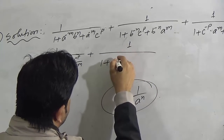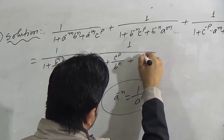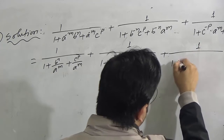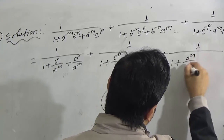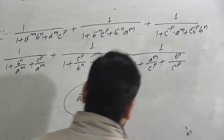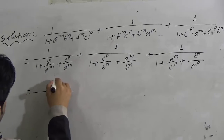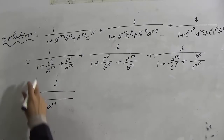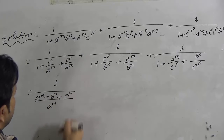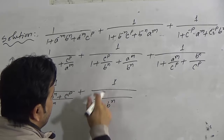Similarly, replacing b to the power minus n with 1 by b to the power n, we get c to the power p by b to the power n plus a to the power m by b to the power n in the second term's denominator. For the third term, replacing c to the power minus p with 1 by c to the power p gives a to the power m by c to the power p plus b to the power n by c to the power p. Now taking the LCM in each denominator: for the first term, LCM is a to the power m, giving a to the power m plus b to the power n plus c to the power p. For the second term, LCM is b to the power n, giving b to the power n plus c to the power p plus a to the power m.